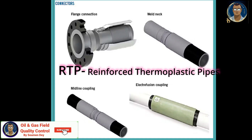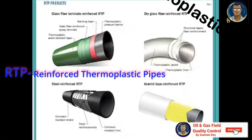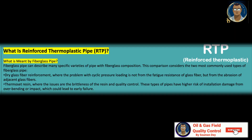The strength of the pipe is its reinforcement. RTP has been replacing steel in many applications with great success, including oil and gas pipeline projects, because of its versatility and durability. For example, the proprietary five-layer construction of Thermoflex pipes consists of an abrasion-resistant HDPE outer jacket and aramid or glass fiber reinforcement.